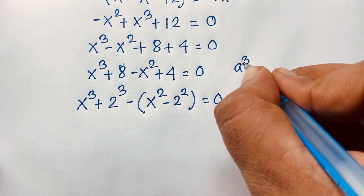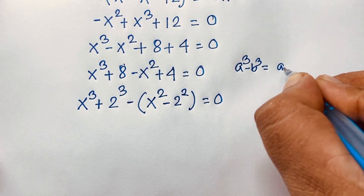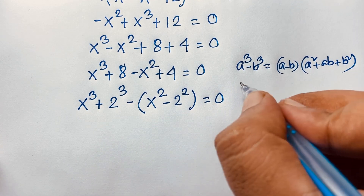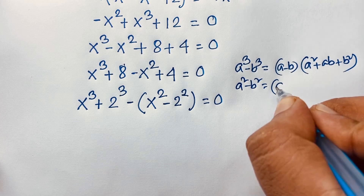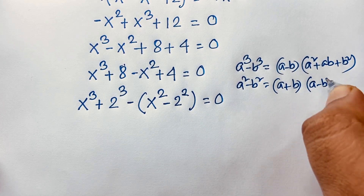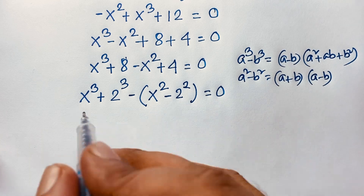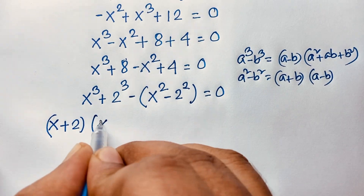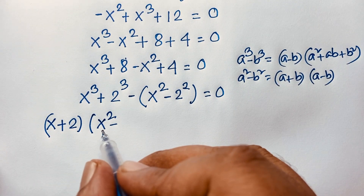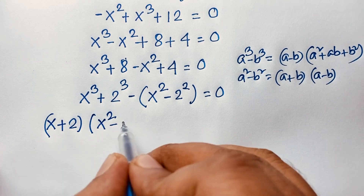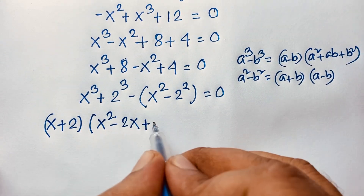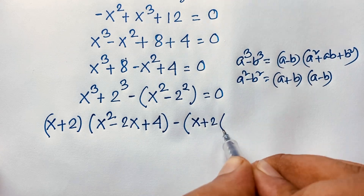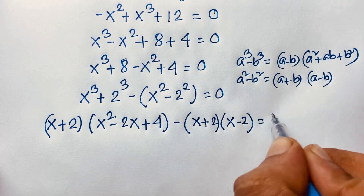Recall that a cube plus b cube equals a plus b times a squared minus ab plus b squared. And a squared minus b squared equals a plus b times a minus b. Applying these formulas here, with x as a and 2 as b, x cubed plus 2 cubed gives x plus 2 times x squared minus 2x plus 4, minus the a squared minus b squared factored form, equals 0.